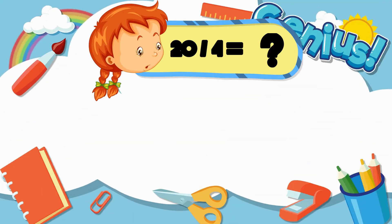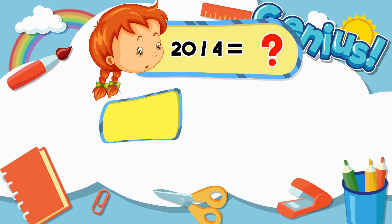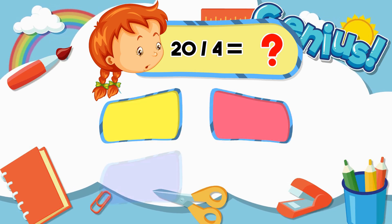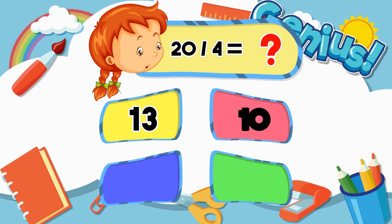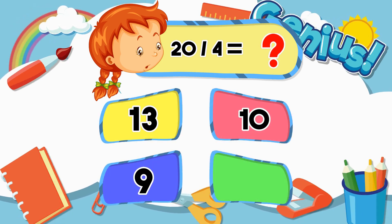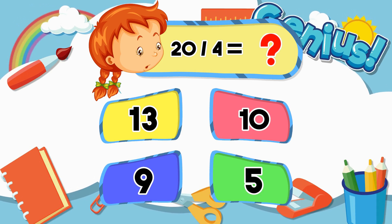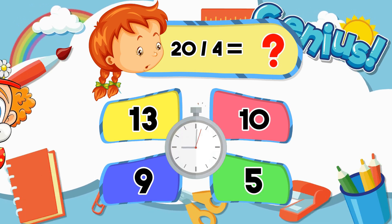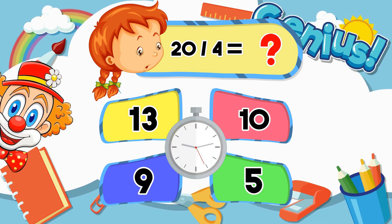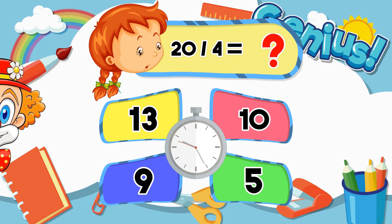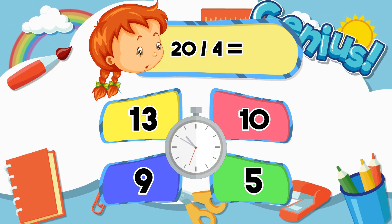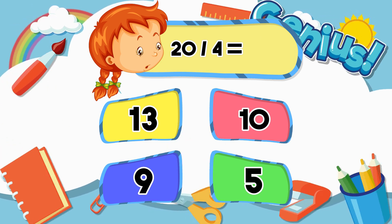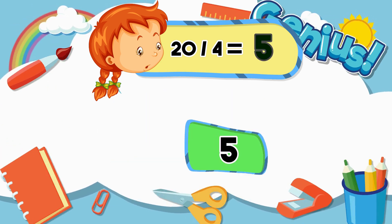What is 20 divided by 4? Options: 13, 10, 9, 5. Answer: 5.